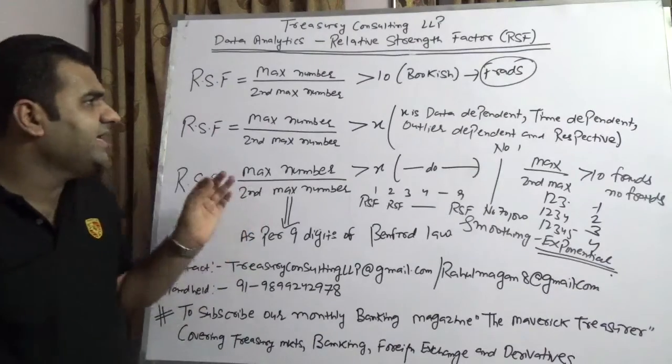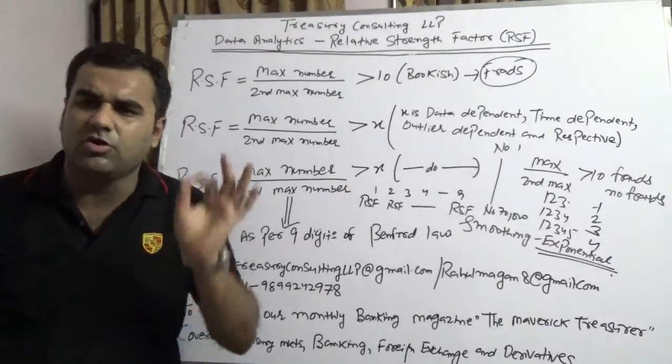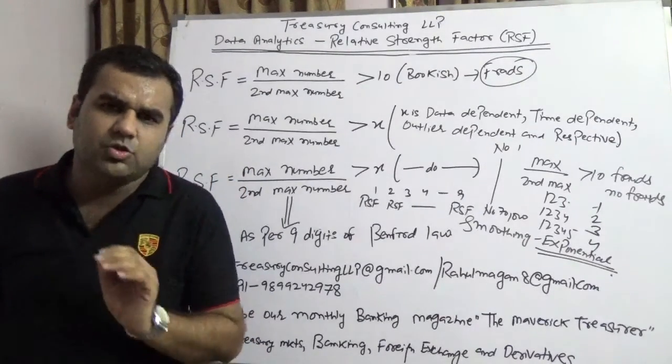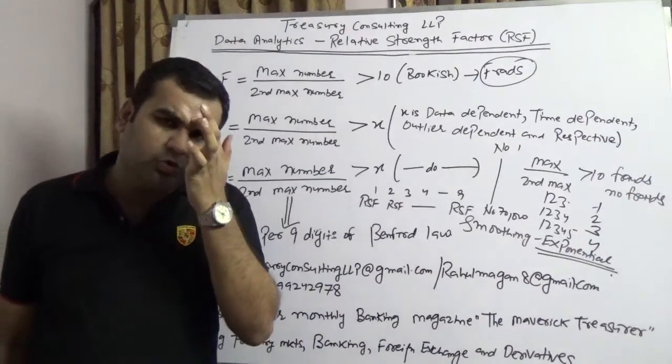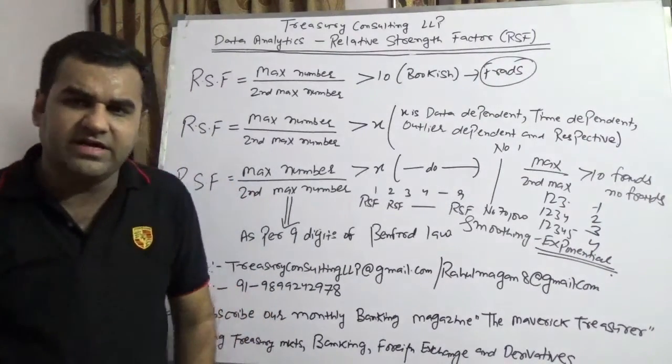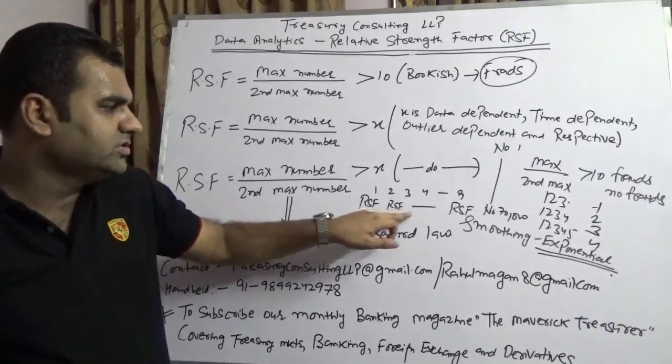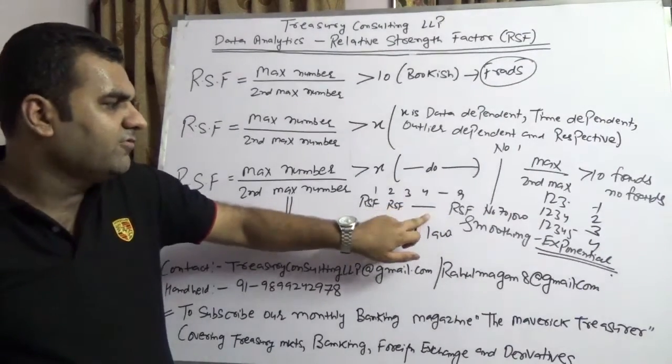So in nutshell, as a data analytics technique, we are requesting you not to use Relative Strength Factor on a whole series, because this is going to distort your data. Please don't use on the whole series. Kindly use this only on the two parts, on the digit-wise using Benford. So you're going to use one, you're going to use two, you're going to use three, you're going to use four, you're going to use nine.